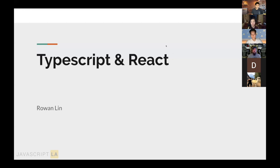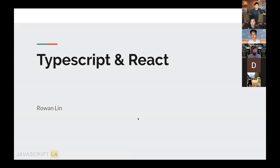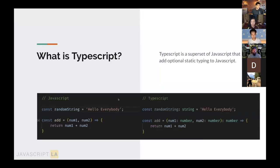Rowan's screen is visible. The host mutes everyone for etiquette — keep your mic muted while a speaker is presenting, use the chat for questions, and turn on your mic when the speaker finishes. Rowan begins: his talk covers TypeScript and React together. TypeScript is a superset of JavaScript that adds optional static typing — it extends JavaScript and makes typing static, whereas JavaScript variables are dynamically typed.